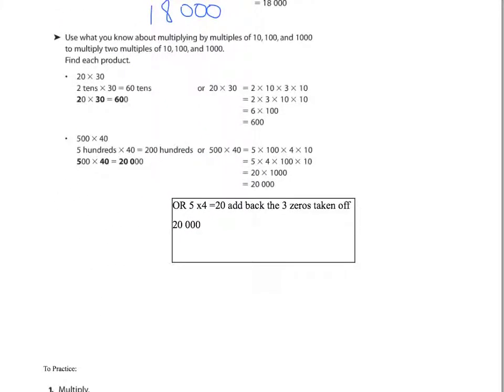How would you use what you know about multiplying by multiples of 10, 100, 1,000 to multiply two multiples of 10, two multiples of 100, two multiples of 1,000? Really, it doesn't change it very much. You're just taking the zeros off both sides. So, for example, 20 times 30. Well, 2 times 3 is 6. How many zeros did I take off? I took off two zeros. How many are I going to add back on? Two zeros. 600.